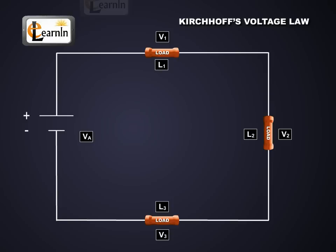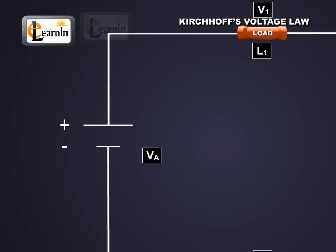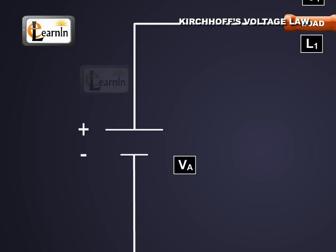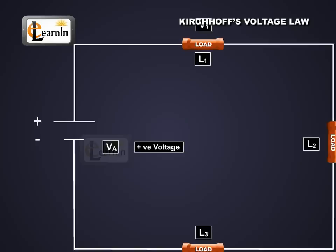In this circuit, we're going to consider voltage to be positive when it's added into the circuit, and negative when it's taken away. Since a battery gives voltage to a circuit, we take VA as positive. Since each of the loads have a voltage drop across them, we take those voltages as negative.